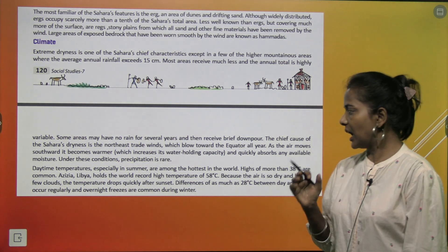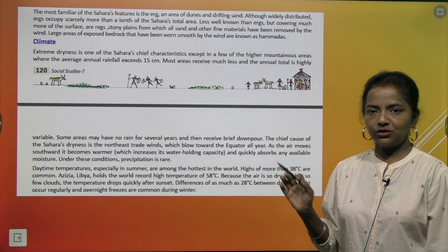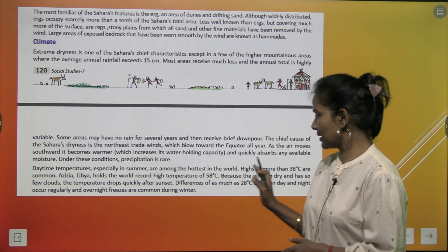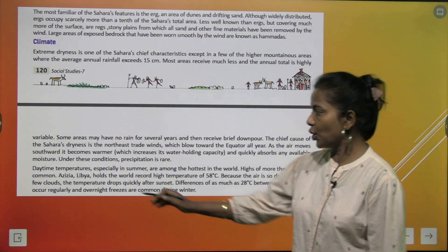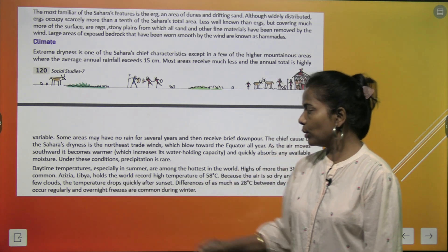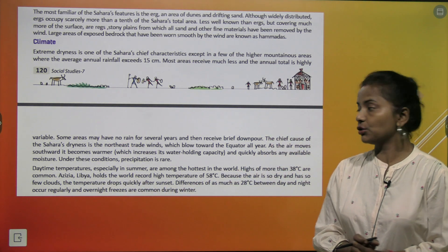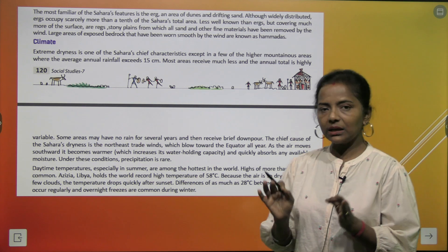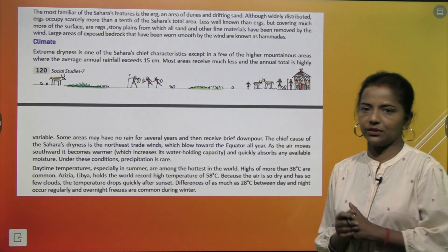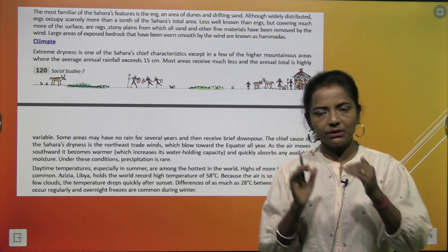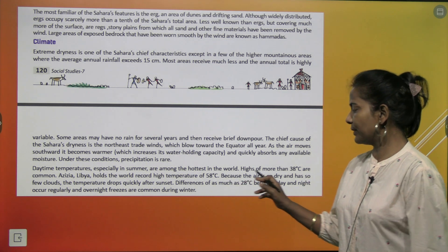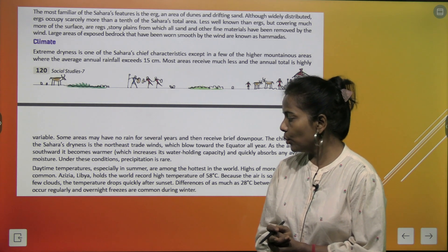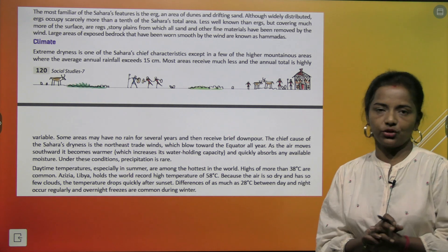Daytime temperatures, especially in summer, are among the hottest in the world. Highs of more than 38 degree Celsius are common. Azizia, Libya holds the world record high temperature of 58 degree Celsius. Because the air is so dry and has so few clouds, the temperature drops quickly after sunset. Differences of as much as 28 degree Celsius between day and night occur regularly, and overnight freezes are common during winter.